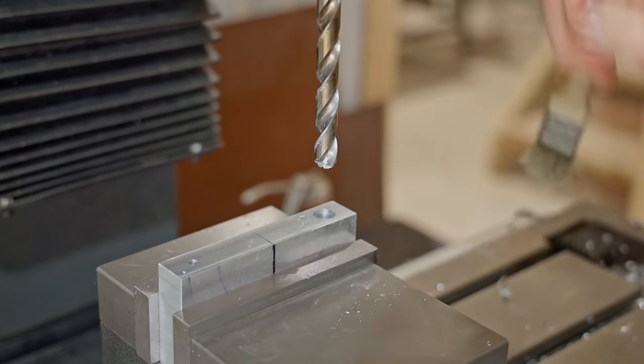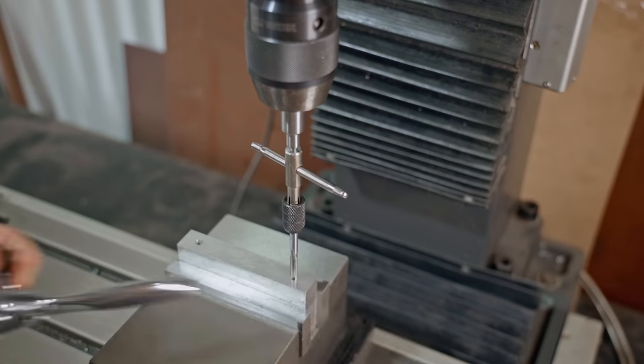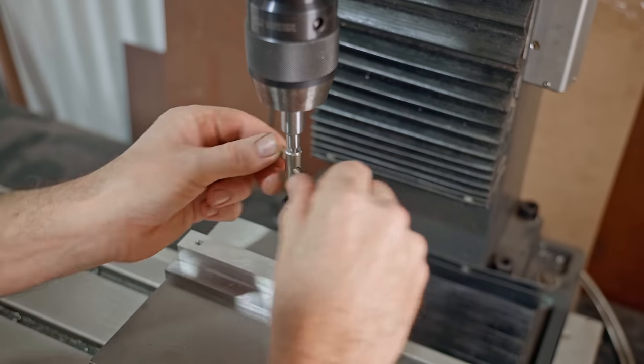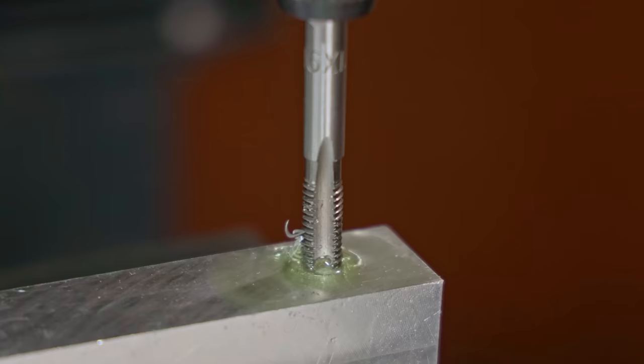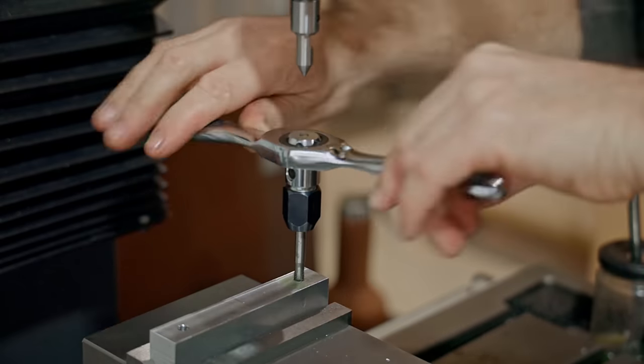I really like this tap wrench but it doesn't work with a tap follower as it has a ball detent on the top, so I have to use this cheap one instead. I just get the thread started knowing that the tap is square to the workpiece, then I go back to the ratchet wrench and finish it with that.